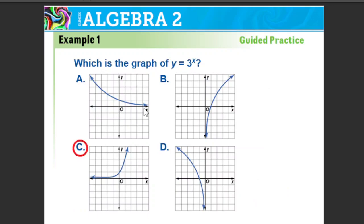Let's take a look at another example. It says which is the graph of y equals 3 to the x power, and it looks like they went ahead and answered this for us. It is C. It's going to look a lot like the one we just had, except it's going to grow faster. The way you can tell is: 3 to the 1st power would be 3, and sure enough, there it is crossing at 3.